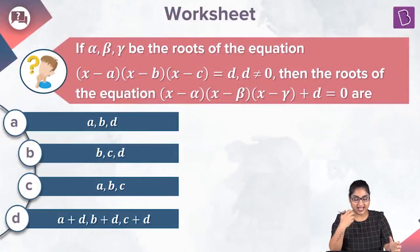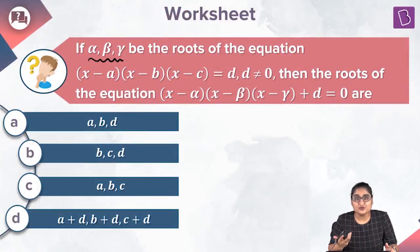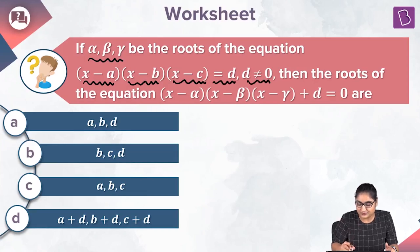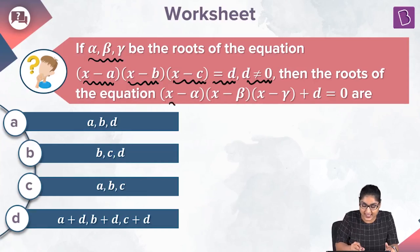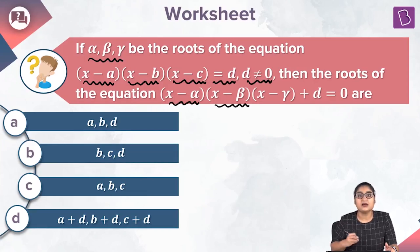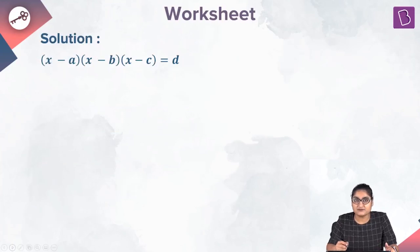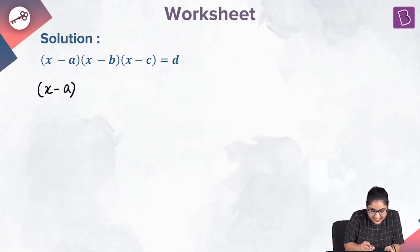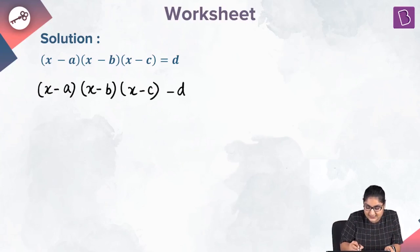In this question, we have been given that alpha, beta, gamma are the roots of the equation x minus a times x minus b times x minus c equal to d, where d is not equal to 0. We have to find the roots of x minus alpha times x minus beta times x minus gamma plus d equal to 0. Rewriting by taking d to the left: x minus a times x minus b times x minus c minus d equal to 0.